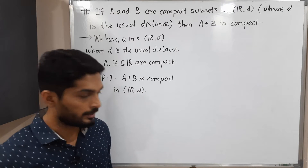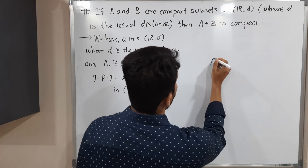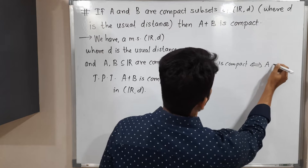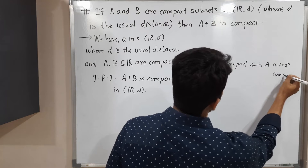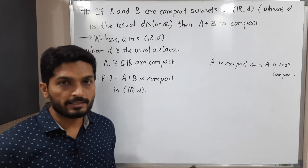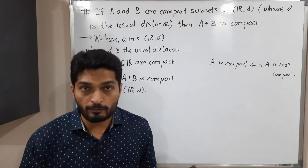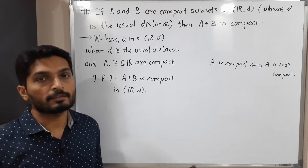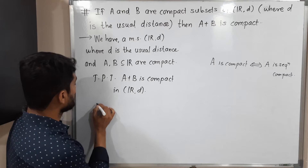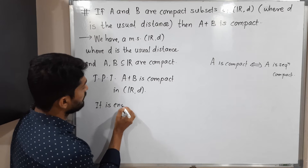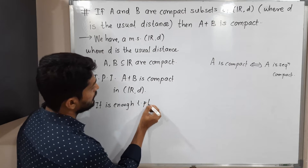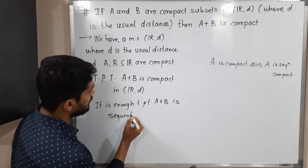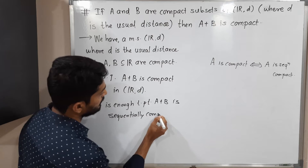One result I am going to use here is: A is compact if and only if A is sequentially compact. That means if you have any compact set then it is sequentially compact, or if you have any sequentially compact set then it is compact. So it is enough to prove that A plus B is sequentially compact in ℝᵈ.